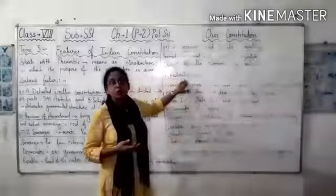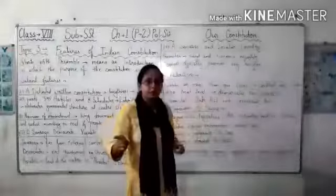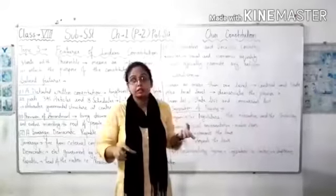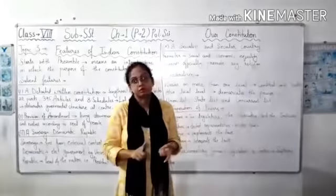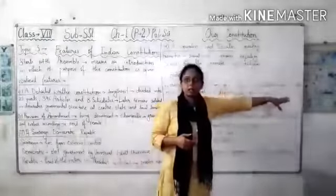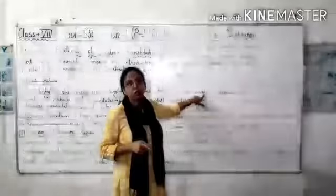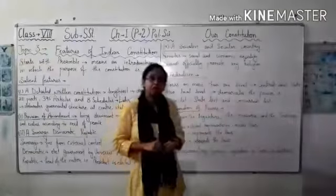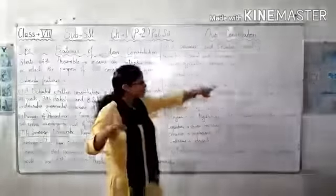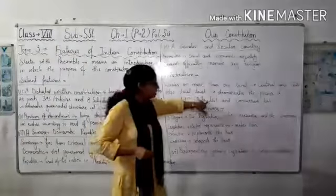Our country is also based on federalism. India is a vast country, and to govern that country from one centre is difficult. So, we have government on two levels — central and state level. We also have local level. Our Constitution distributes the power of the central and state in three lists: union list, state list, and concurrent list.